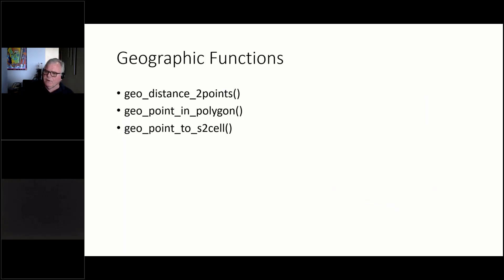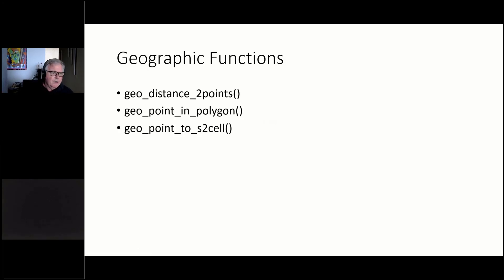KQL has built-in geography functions. KQL understands the concept of geography and polygons. You can do things like: given the latitude and longitude of two points, tell me the distance between them. Or given a point and a polygon, tell me whether that point is inside or outside the polygon. The first function calculates distance; the second returns true or false for whether something is inside or outside a polygon — great for checking whether a delivery has been made, for example. There's also the concept of S2 cells, which I'll come back to — these let you approximate a position really quickly to speed up calculations.